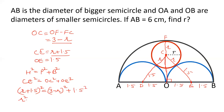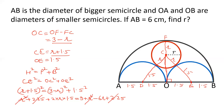Expanding using (A+B)² formula: R² + 2.25 + 2R×1.5 equals (3−R)² which is 9 + R² − 6R, plus 1.5² which is 2.25. R² cancels from both sides, and 2.25 cancels from both sides. This leaves a linear equation: 3R equals 9 − 6R. So 3R + 6R equals 9, giving 9R equals 9, and R equals 1.